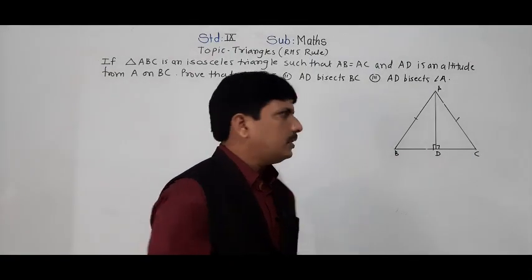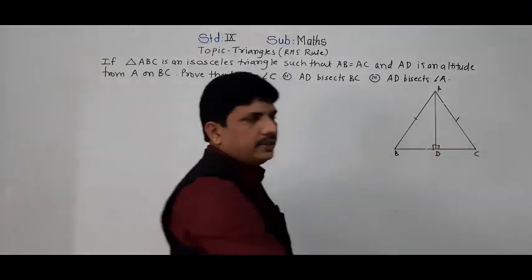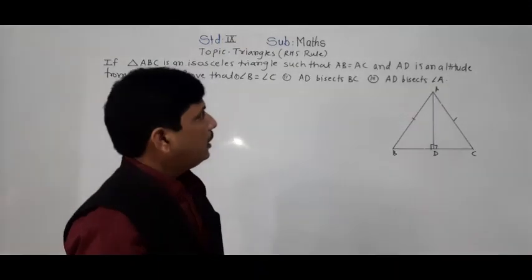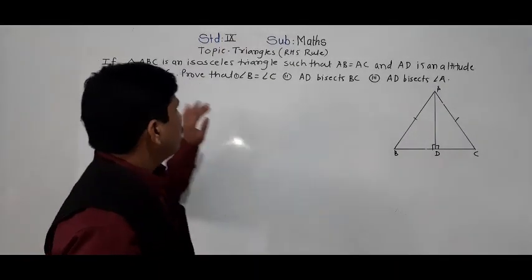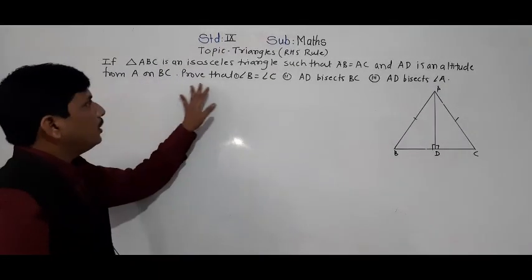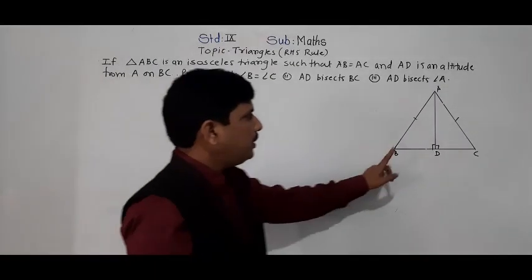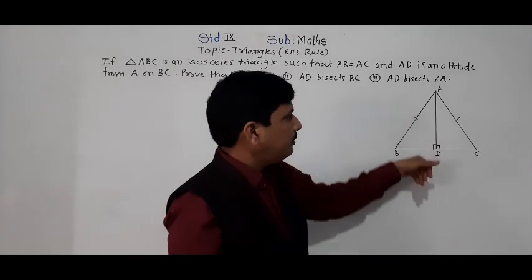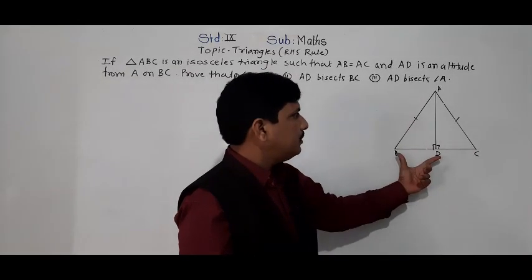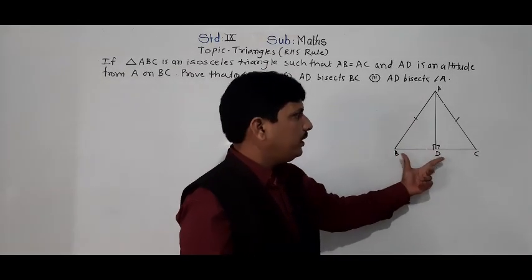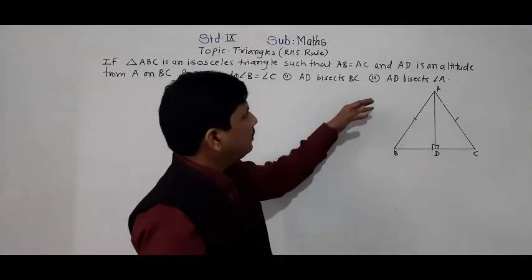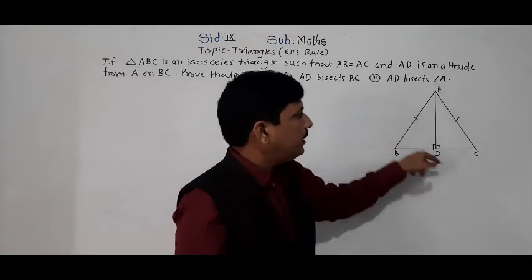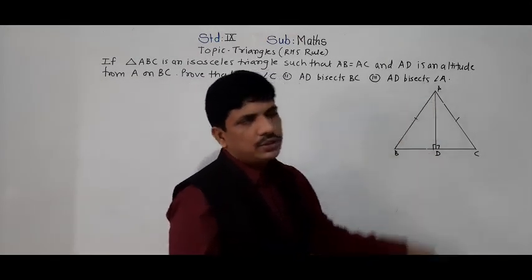So both angles ADB and ADC are equal to 90 degrees. What is given? We have to prove that angle B is equal to angle C. AD bisects BC means we have to prove BD is equal to CD. And the third thing: AD bisects angle A means we have to prove angle BAD is equal to angle CAD.